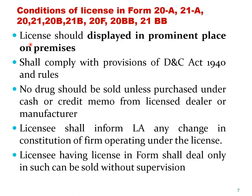Once obtained, the license — whether in Form 20A, 21A, 20, 21, 20B, 21B, 20F, 20BB or 21BB — should be prominently displayed on the premises from where the sale is going to take place. Next time you go to a chemist shop, look around and you will see the license being displayed prominently. Read which license has been obtained, and how many licenses have been obtained by the pharmacist.